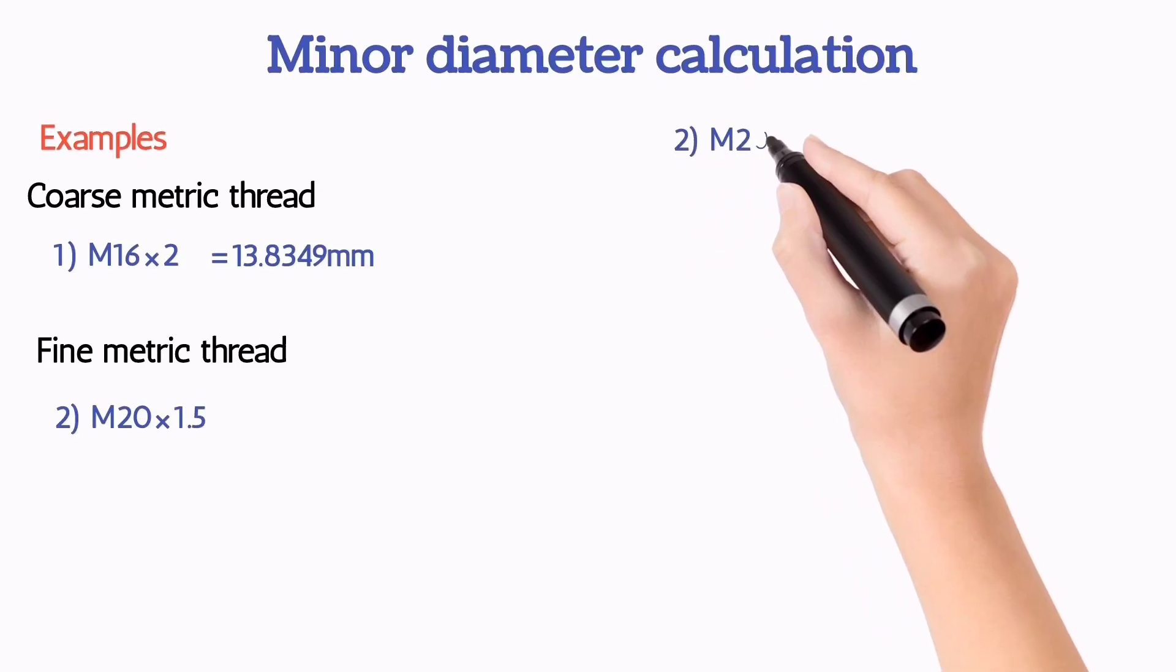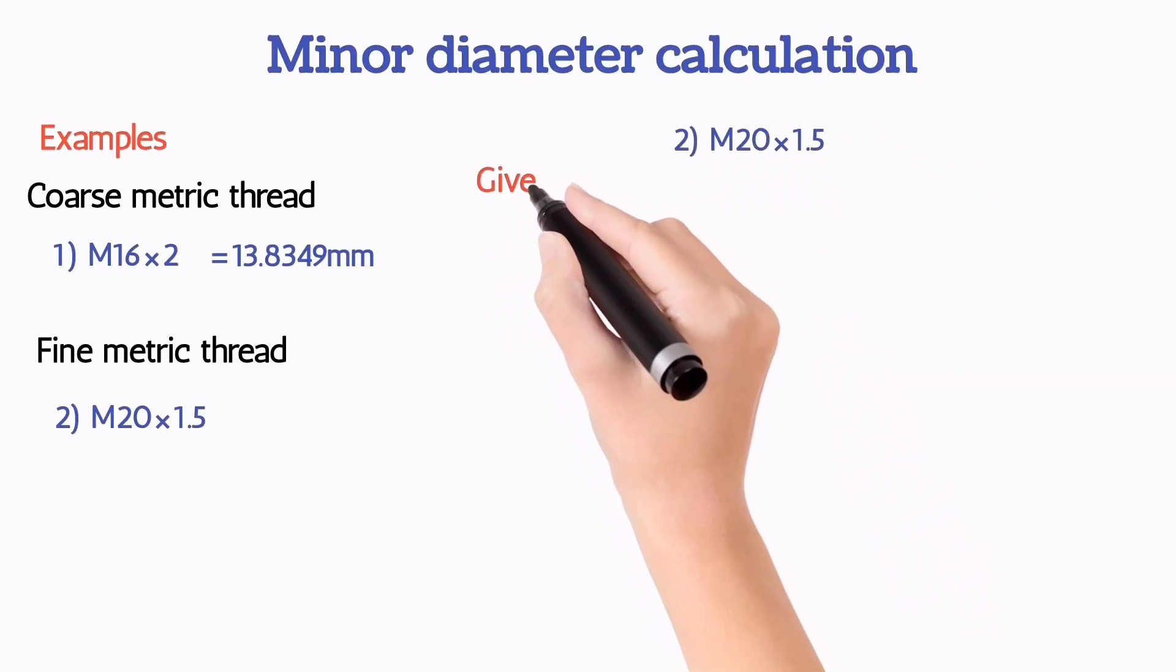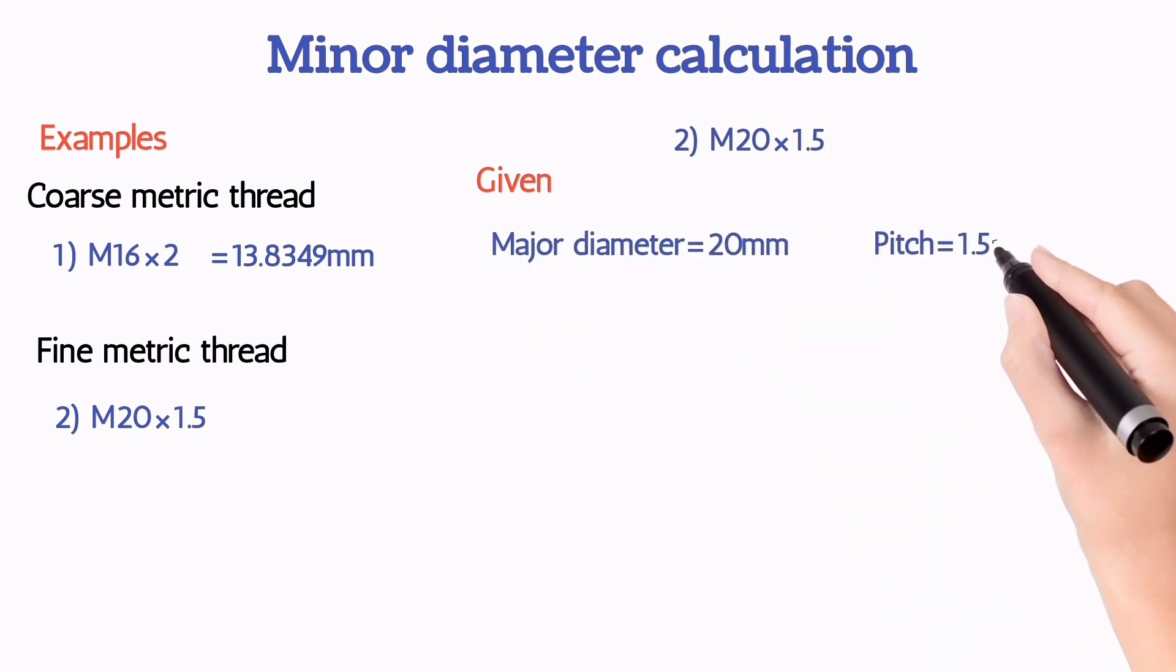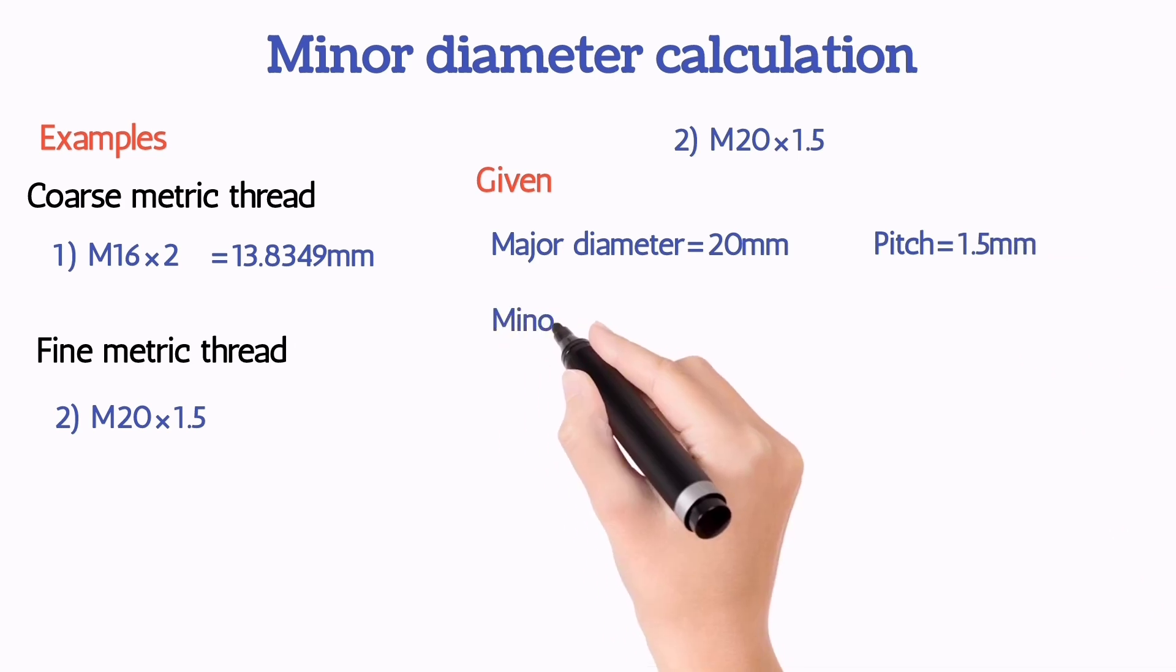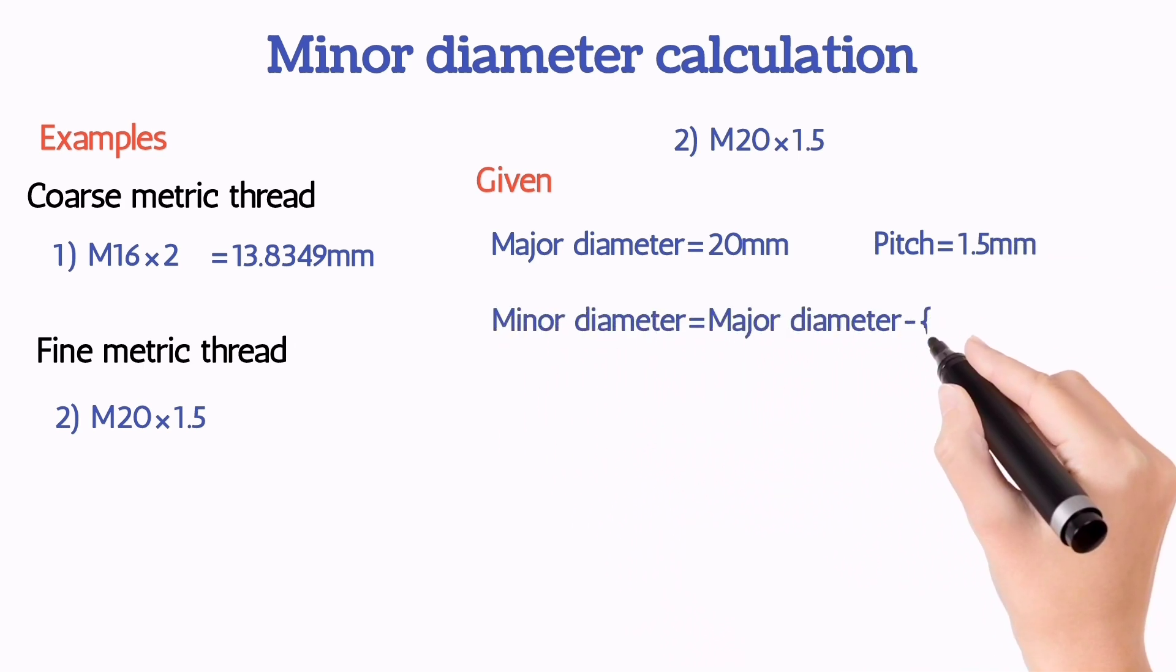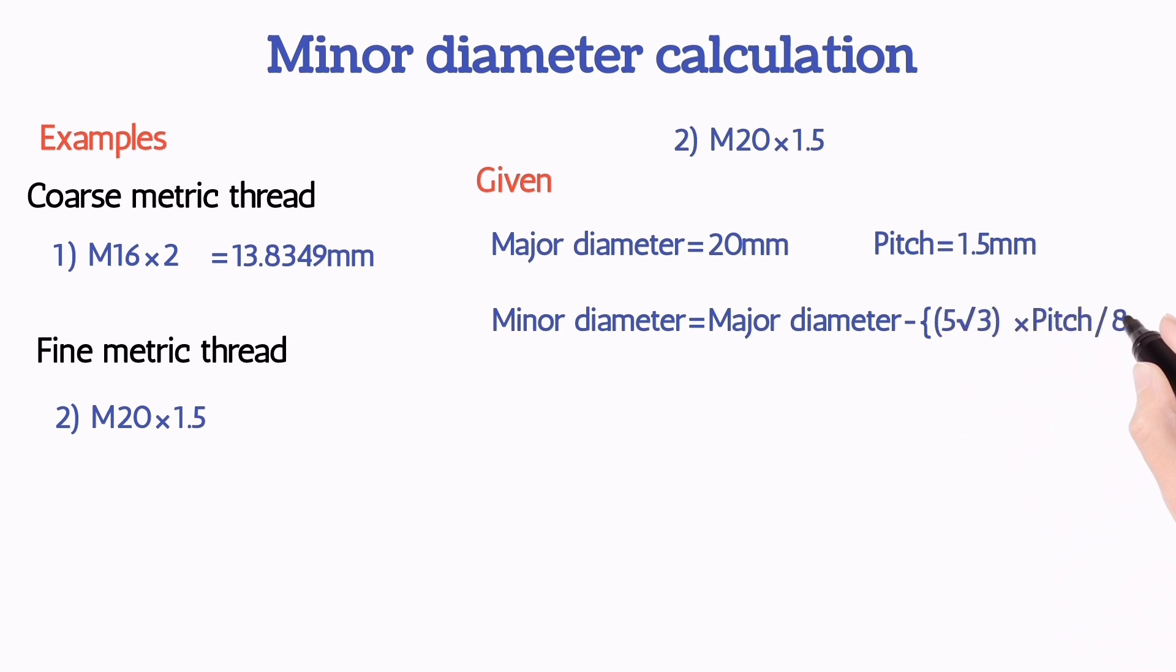Take second example, that is M20 times 1.5. Here major diameter is 20mm and pitch is 1.5mm. We know the formula: minor diameter is equal to major diameter minus 5 times root 3 times pitch divided by 8.